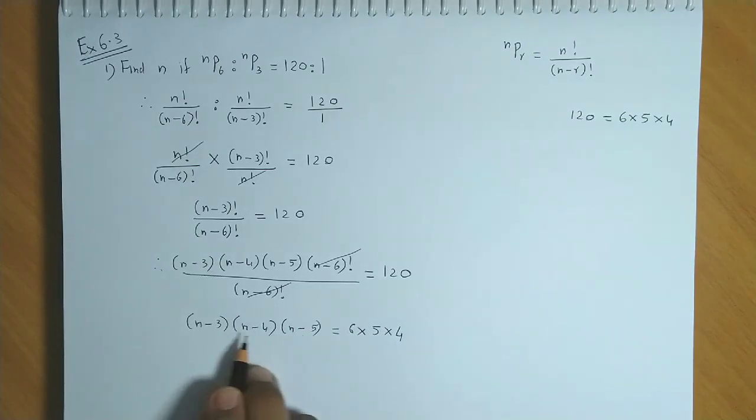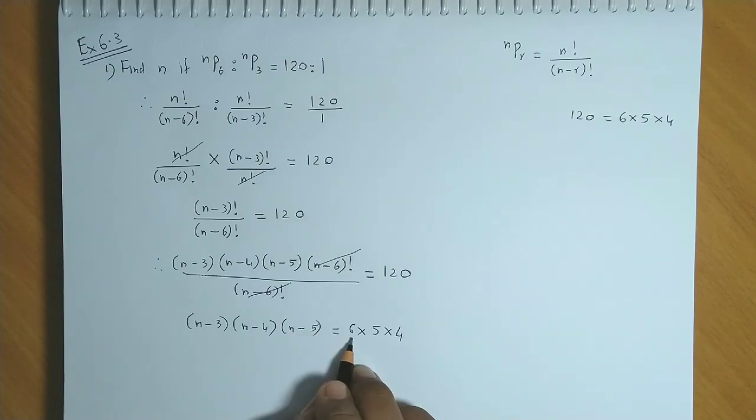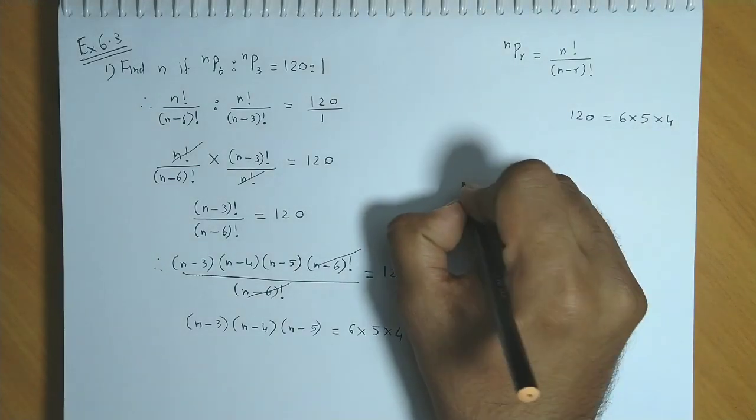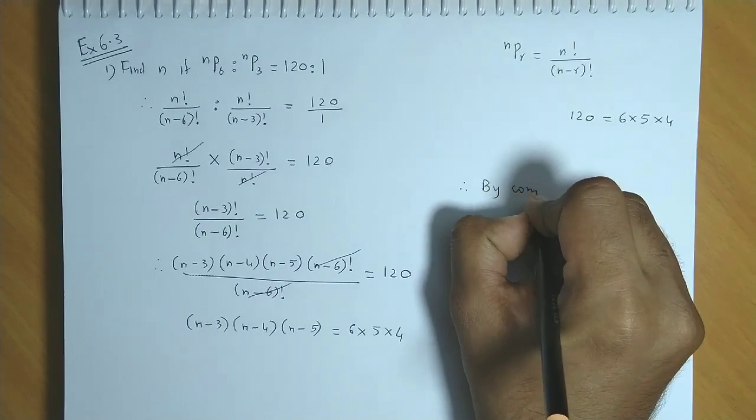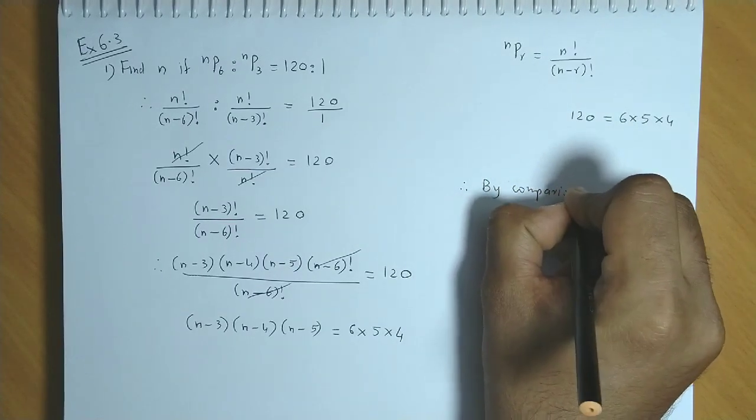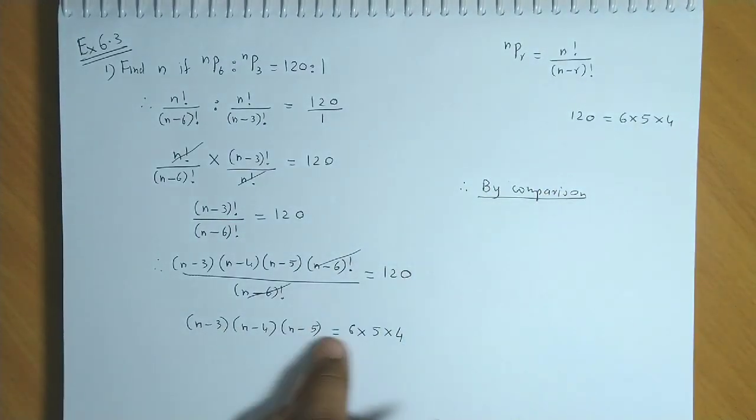Left hand side has 3 factors in descending order with difference of 1. Right hand side also has 3 factors, descending order, and difference of 1. So directly we can find n's answer by comparison. Both sides' arrangement is alike, so now we will compare.